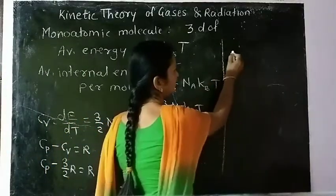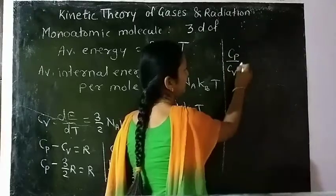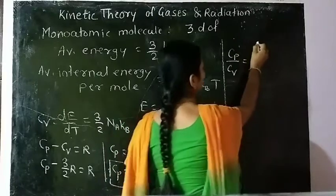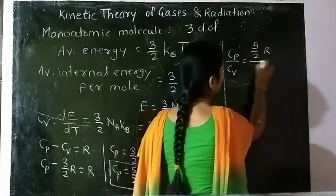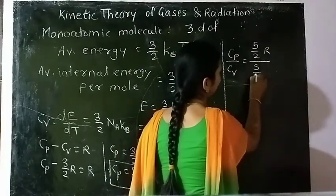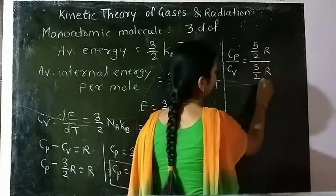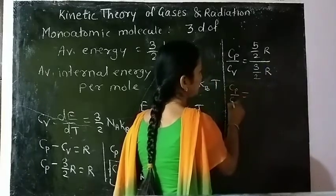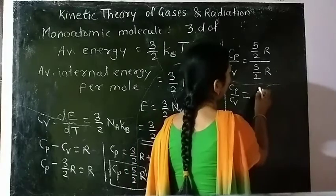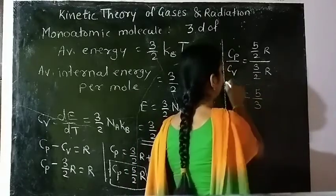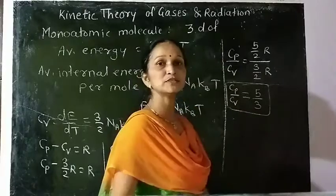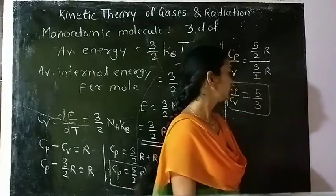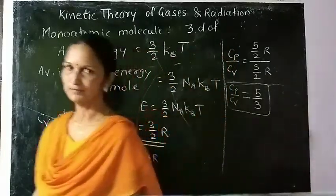Now we find the ratio C_P divided by C_V. It is (5/2 R) / (3/2 R). The 2 and R cancel, giving C_P/C_V = 5/3. So the ratio of specific heats, gamma, equals 5/3 for a monoatomic molecule.